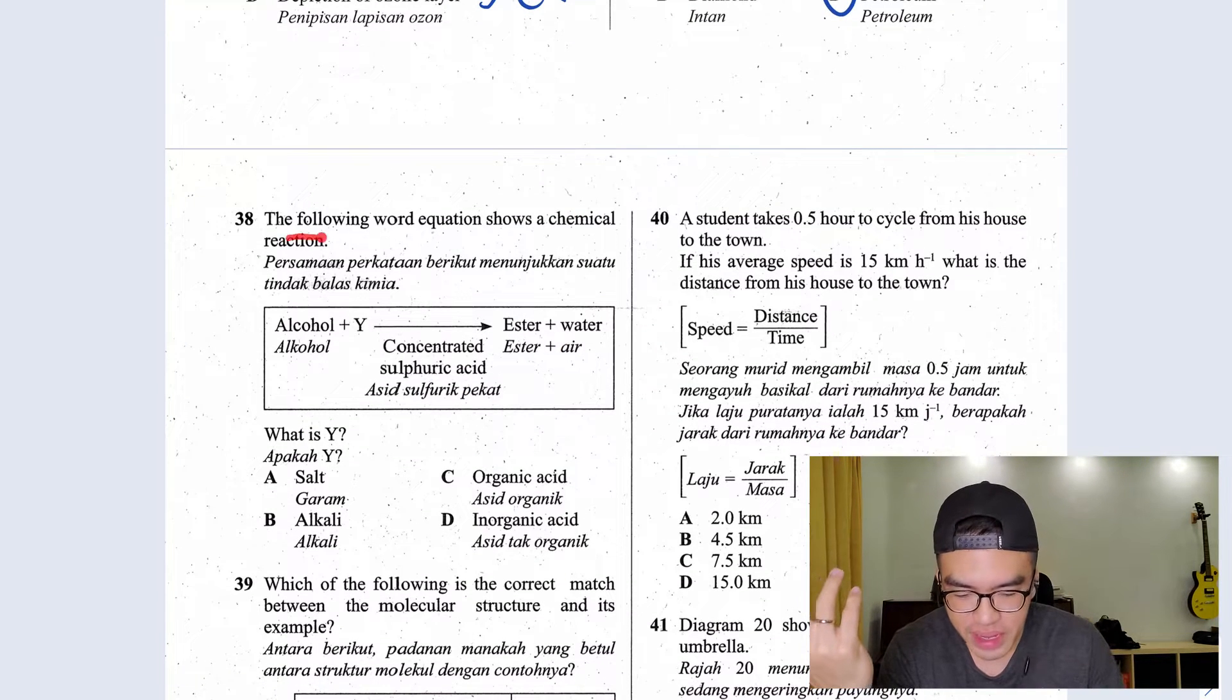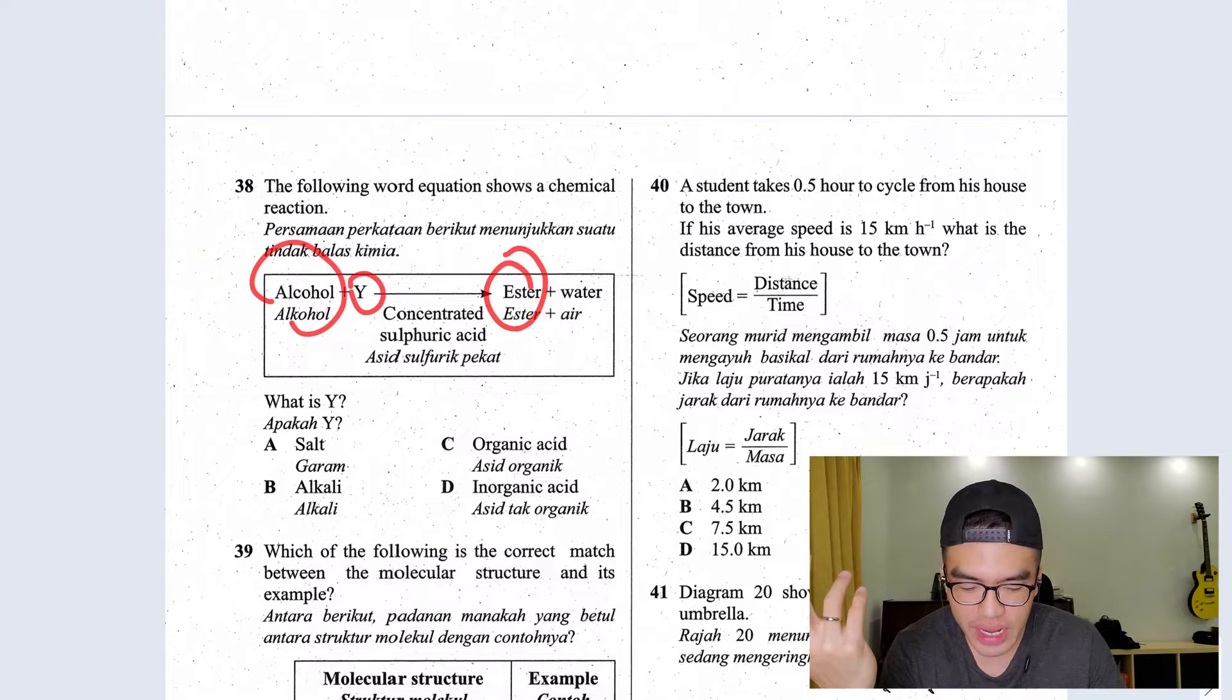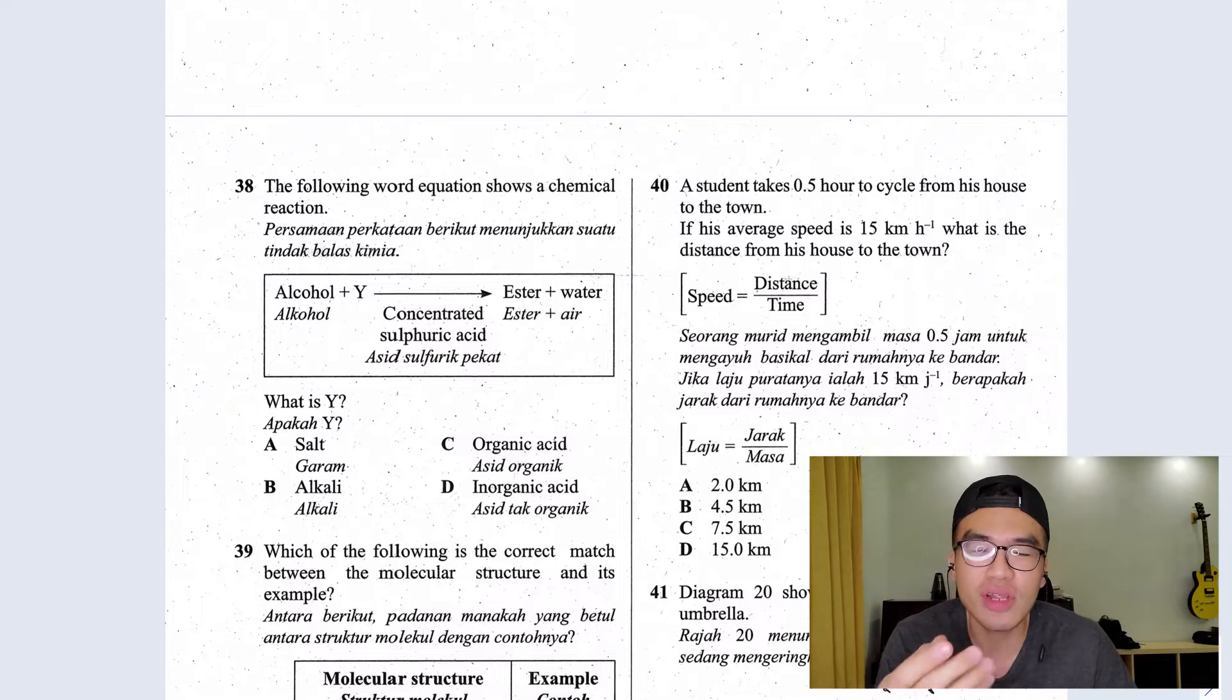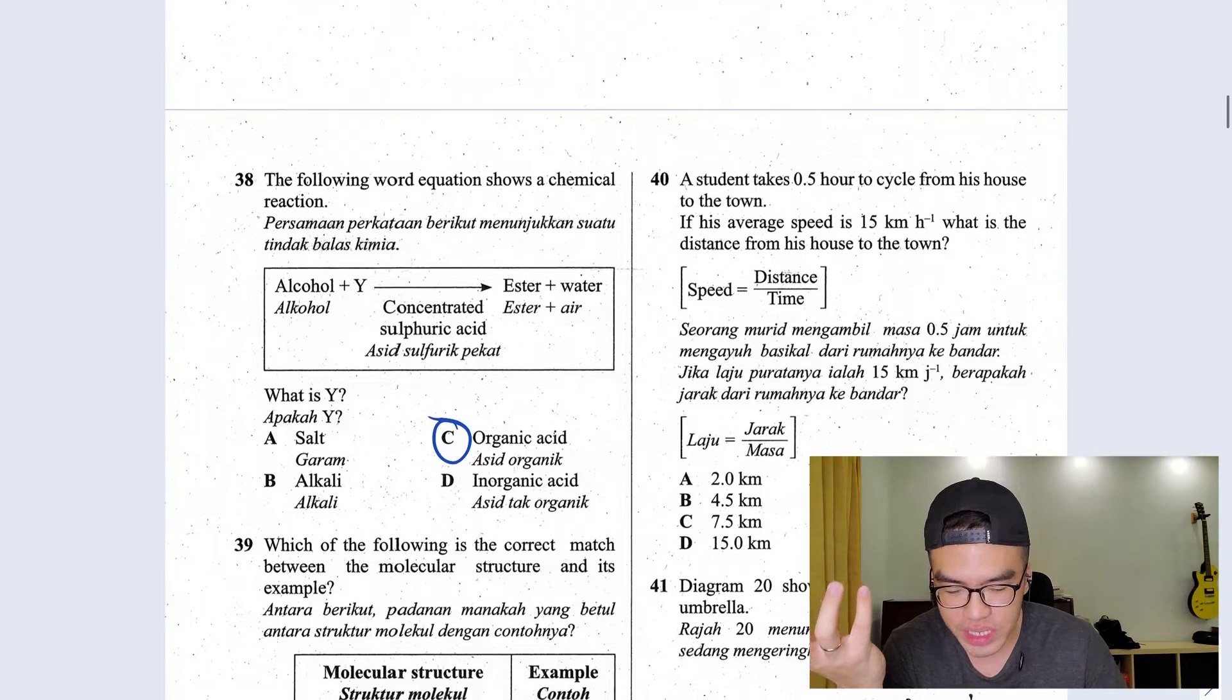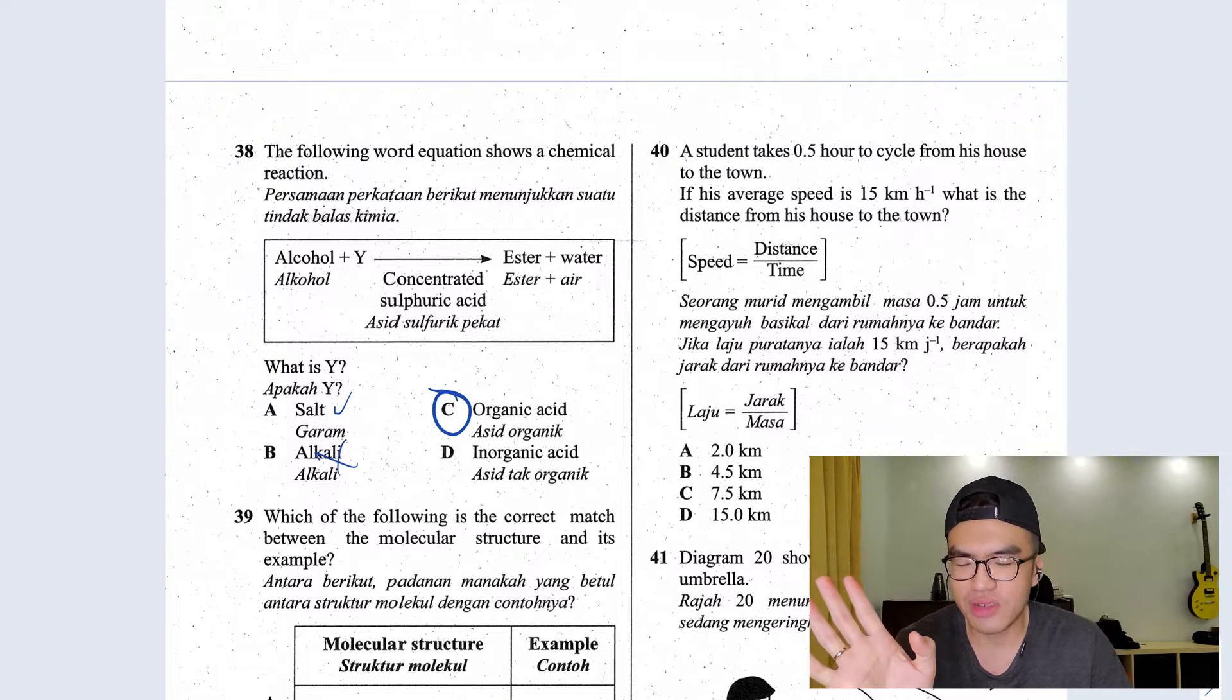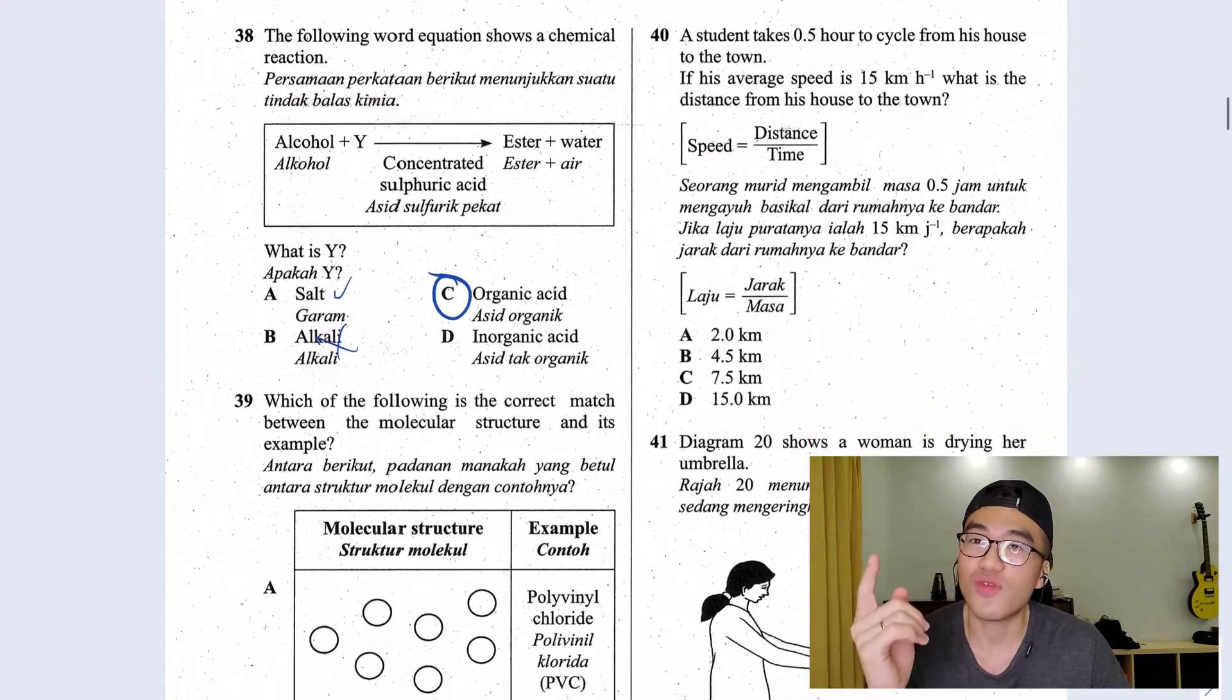Question 38, the following word equation shows a chemical reaction. Alcohol adding Y, you get ester. What is ester? Ester is your perfume. Whenever you have strawberry or pineapple flavoring in your food, do you think they put the real thing in? Most likely not, they are putting ester which is the human-made perfume. So how do you get perfume? You add alcohol and something what we call organic acid. So the answer here will be C. Salt is used in your saponification, the making of soap. Alkaline is not even related here, it's also related to soap. Inorganic acid, I don't even use this.